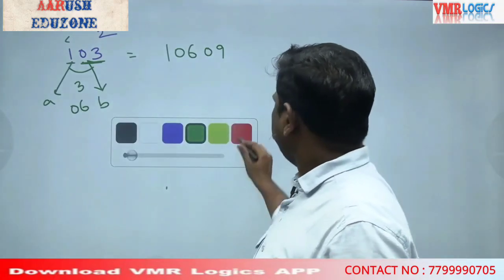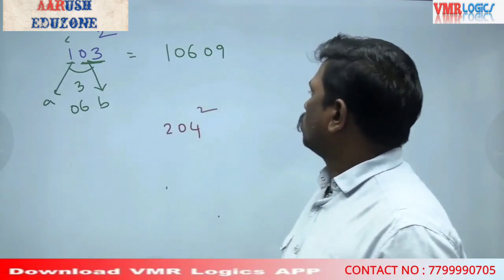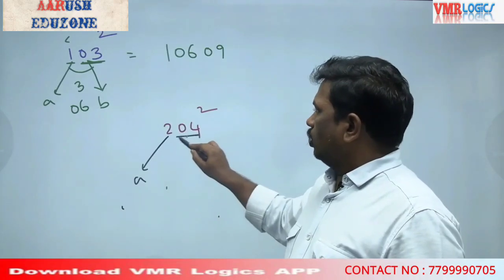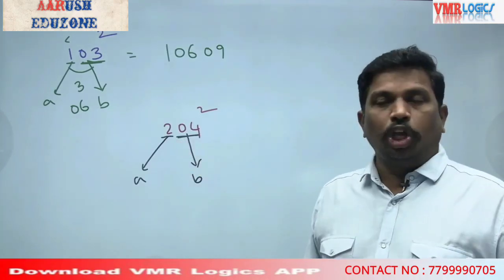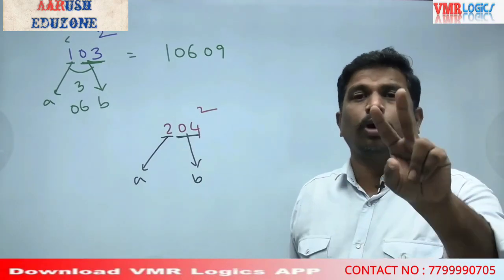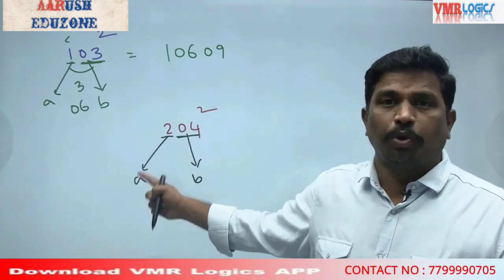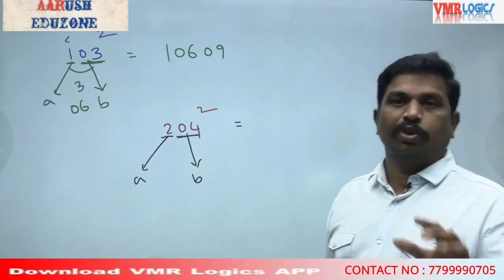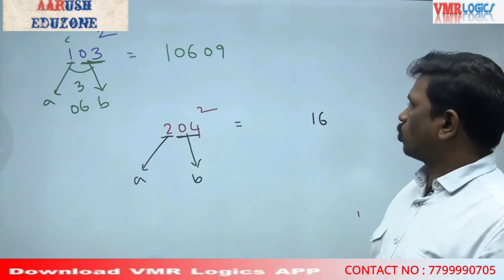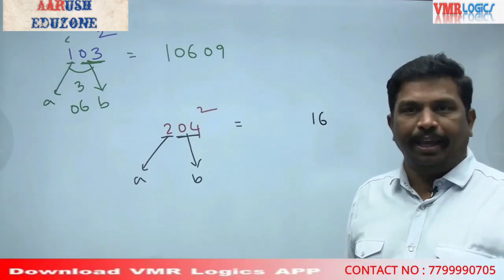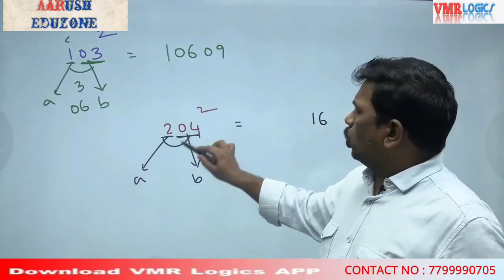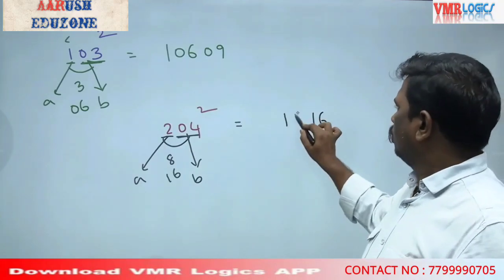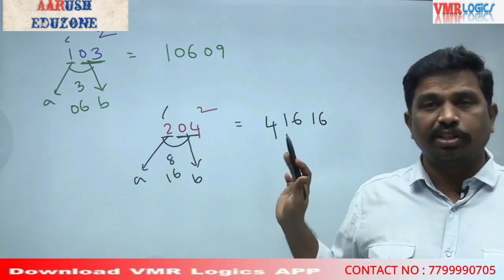Don't worry, look. For 204 squared: B is 4, A is 2. 2AB = 2 into 2 into 4 = 16. A squared = 4. That's your answer.